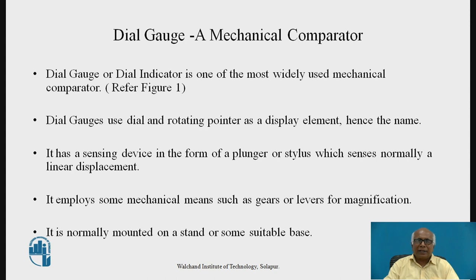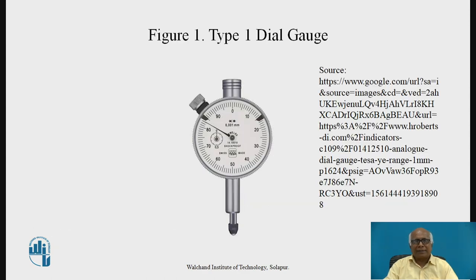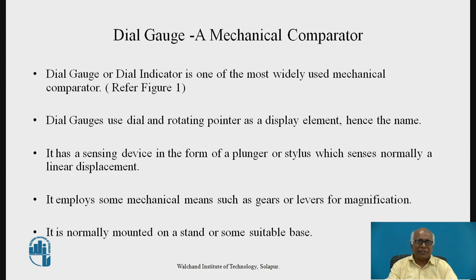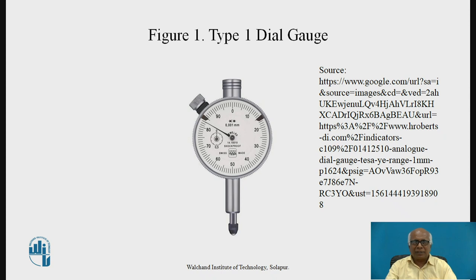Dial gauge or dial indicator is one of the most widely used mechanical comparators. As seen in figure 1, it uses a dial and a rotating pointer as a display unit, hence the name dial gauge. It has a sensing device in the form of a plunger or stylus which senses linear displacement, as shown in this figure.